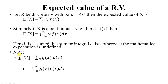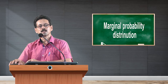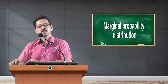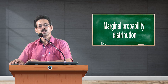Suppose g(x) is a function of the random variable x. Then the expectation of a function of the random variable is given by E(g(x)), which equals the summation of g(x) times the probability mass function p(x). If x is a continuous random variable, the summation is replaced by an integral, so E(g(x)) equals the integral from minus infinity to plus infinity of g(x) times f(x) dx.